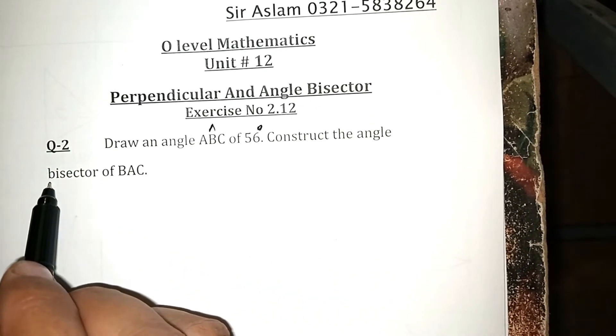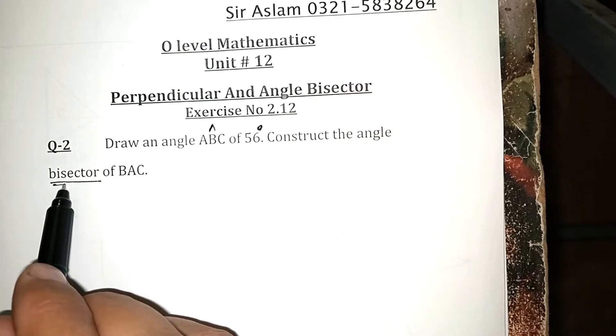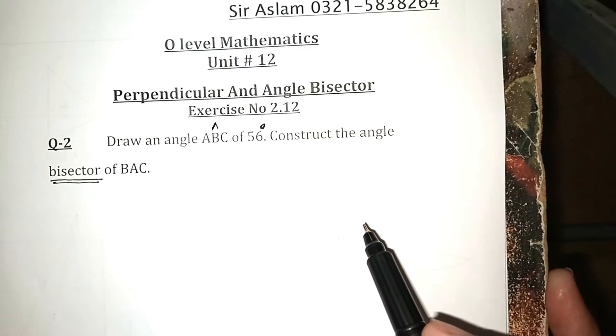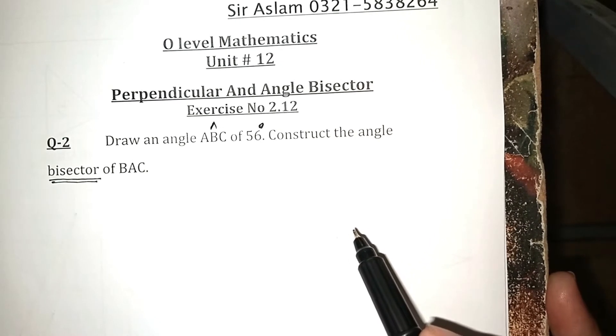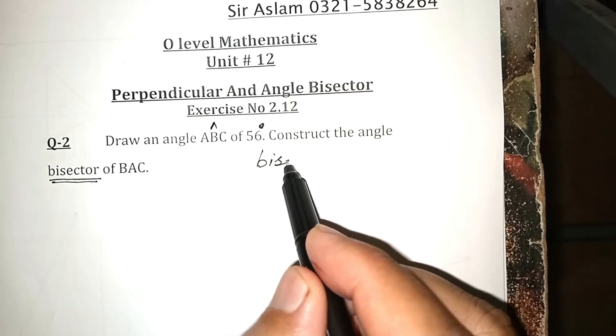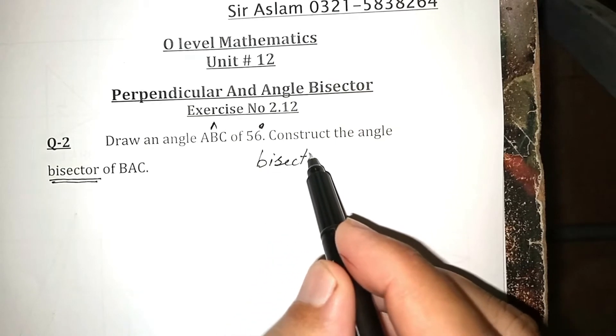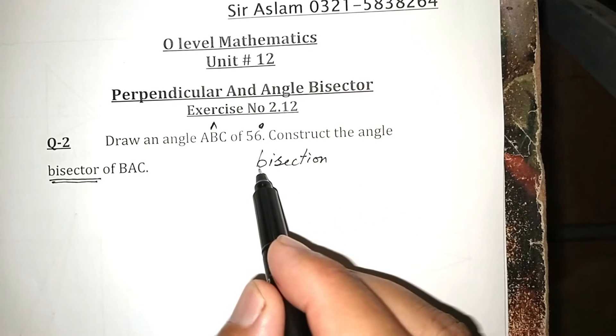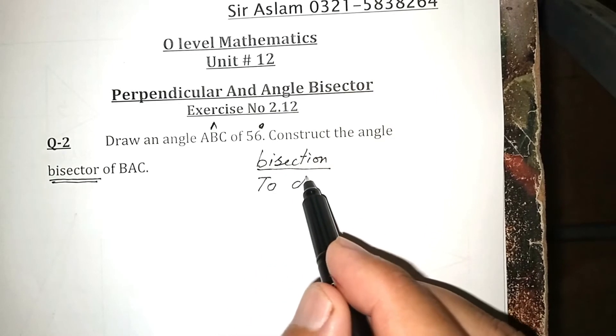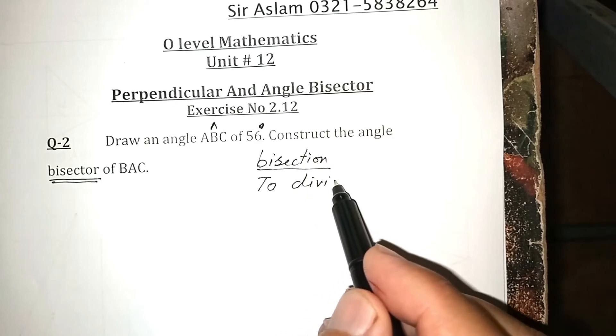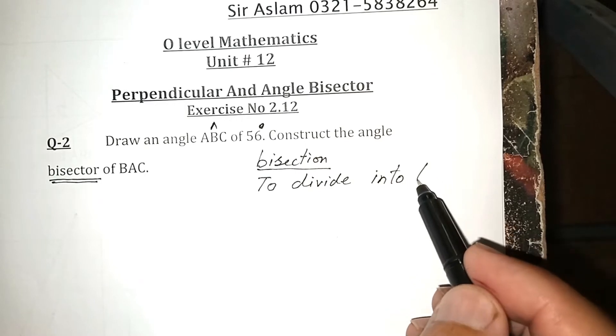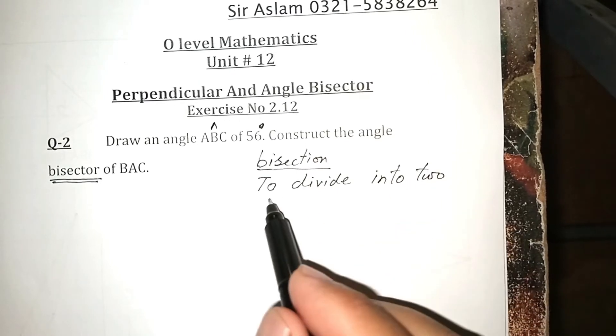First of all, I will explain how the bisection will be done. Bisection means to divide into two equal parts.